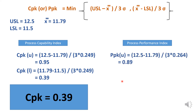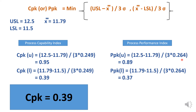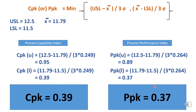For Ppk — the process performance index — we use the same formula but sigma is taken from the root mean square method, which is 0.264 for this case. The upper side calculates to 0.89 and the lower side to 0.37. The Ppk value is taken as the lower value, so Ppk equals 0.37.